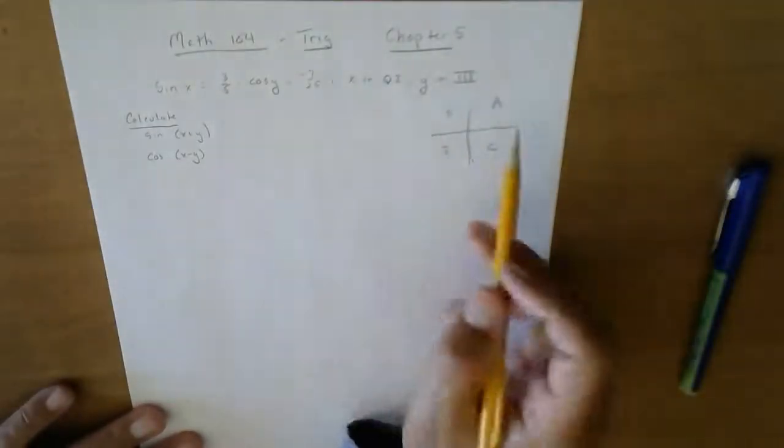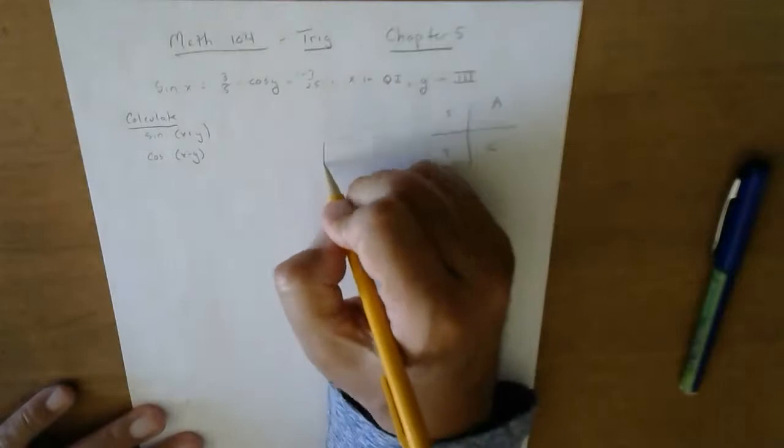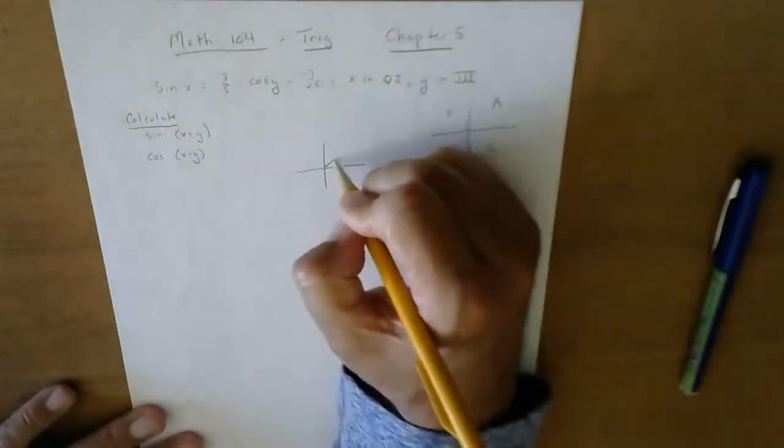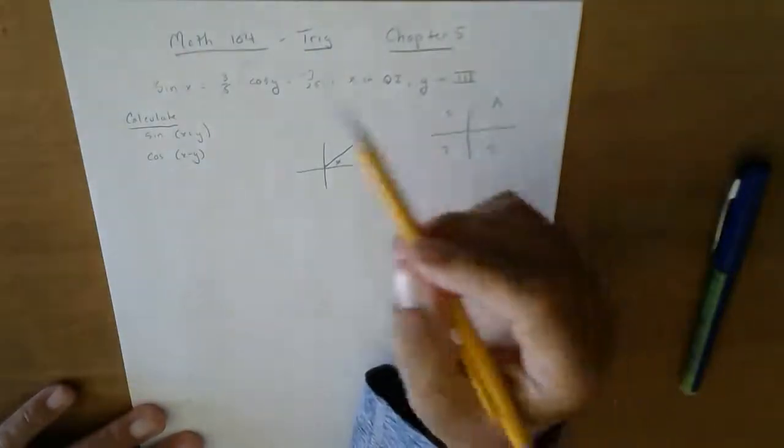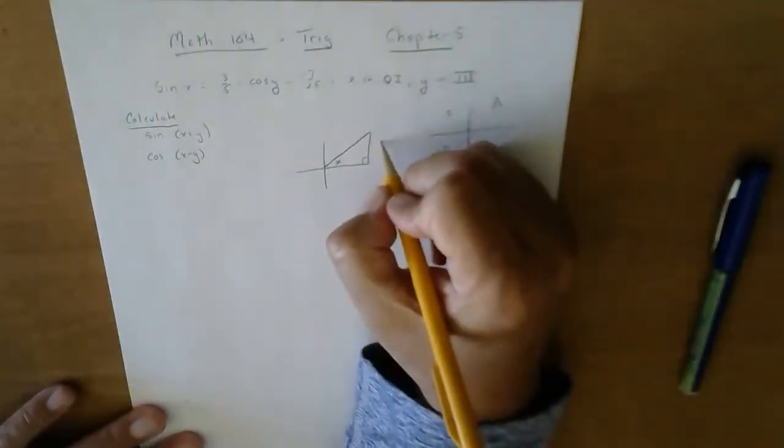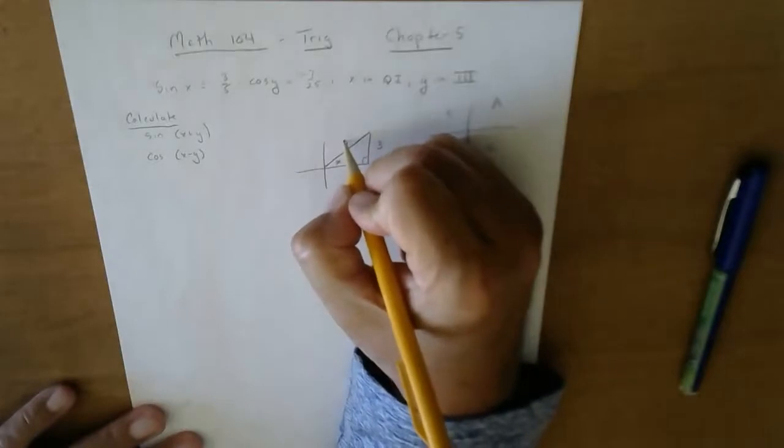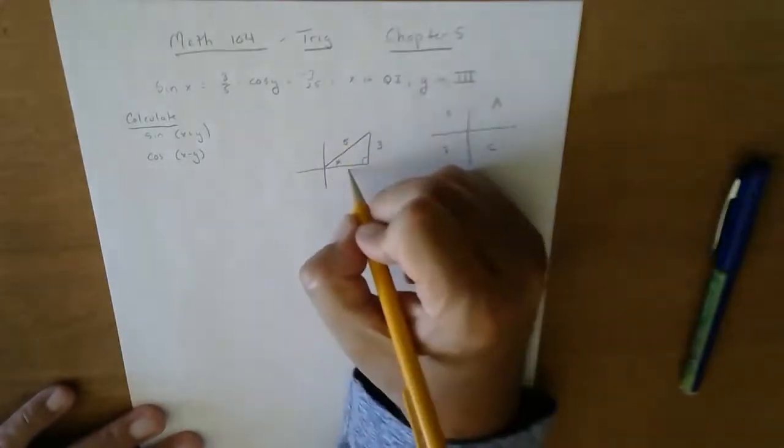So when I get ready and say the sine of x is three-fifths and it's in quadrant one, I'm going to start by putting three-fifths. Here's x. I'm in quadrant one. Sine is opposite over hypotenuse. When I do the work, I know this side is now going to be four.